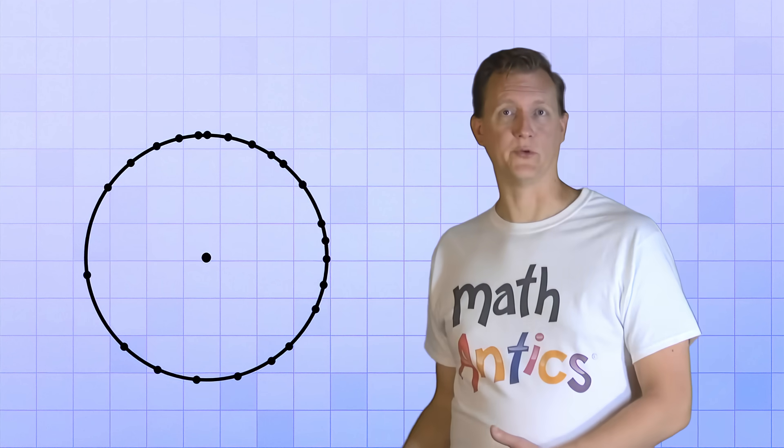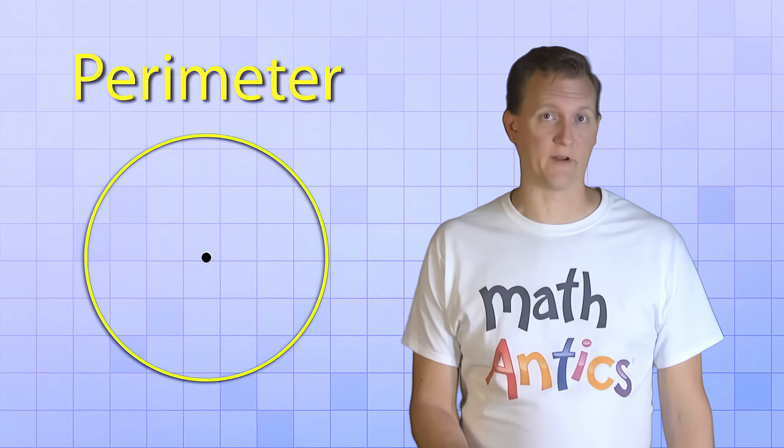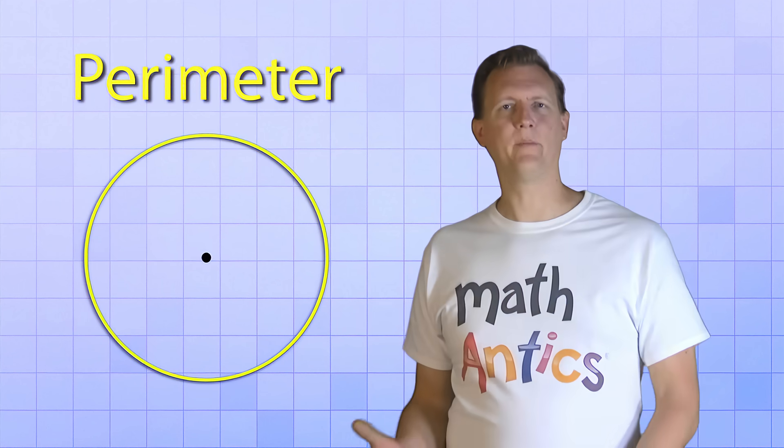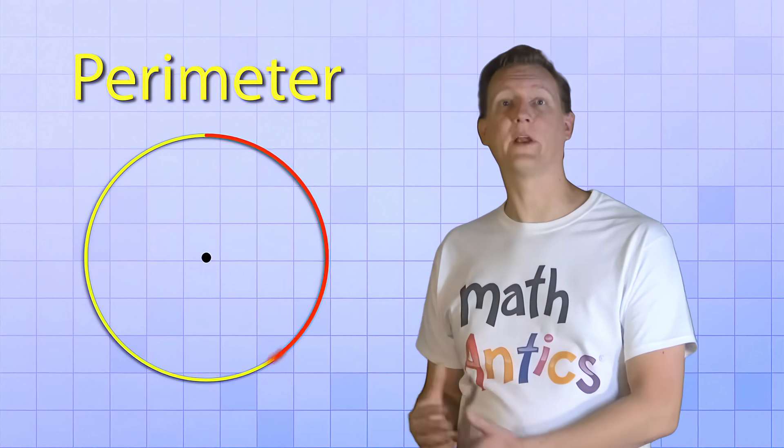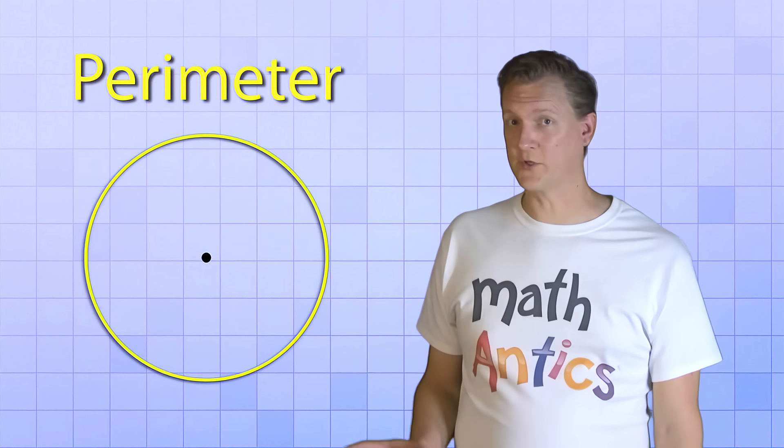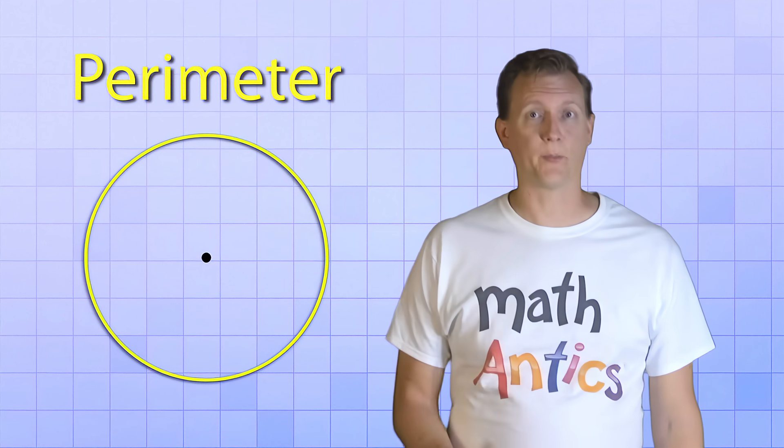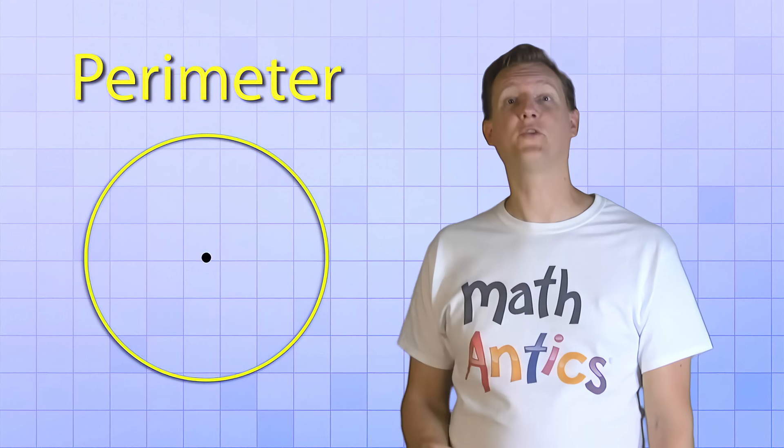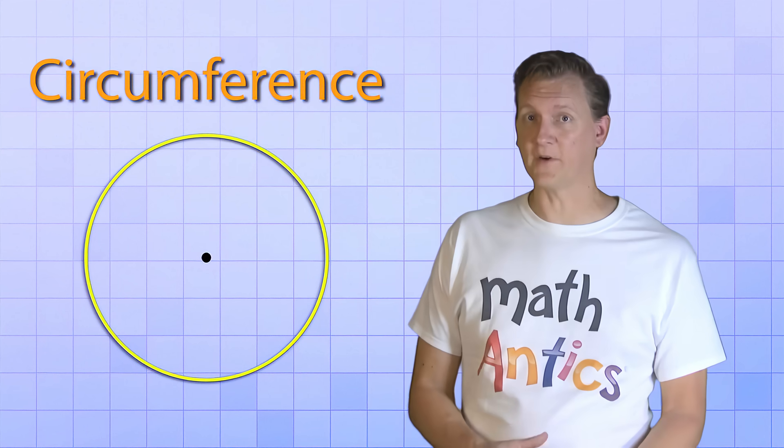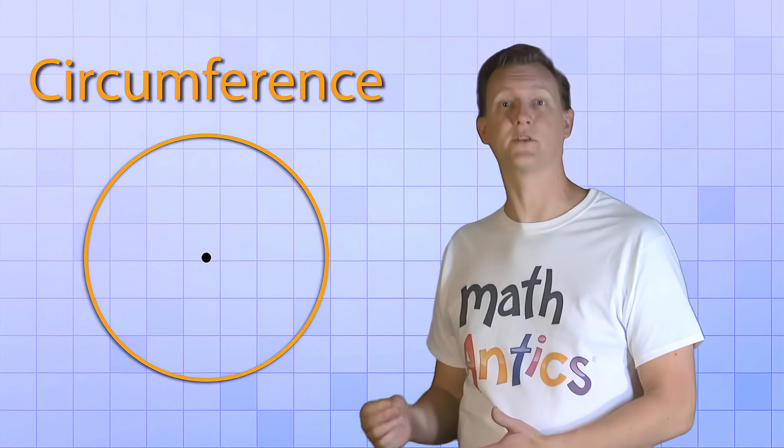All of the equidistant points we drew combine to form the perimeter of the circle. Remember, that perimeter is just the distance all the way around a shape. But because a circle is a special shape, the perimeter of a circle gets a special name. It's called the circumference. The circumference is the distance all the way around a circle.